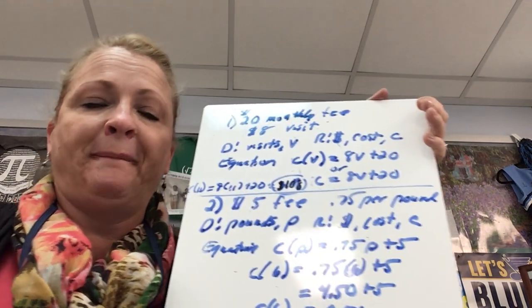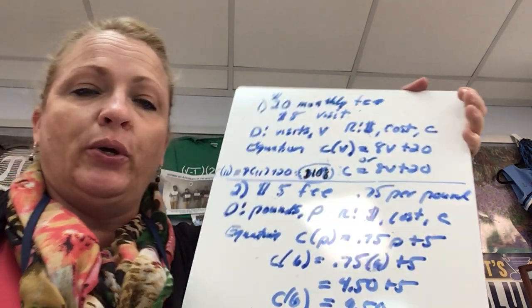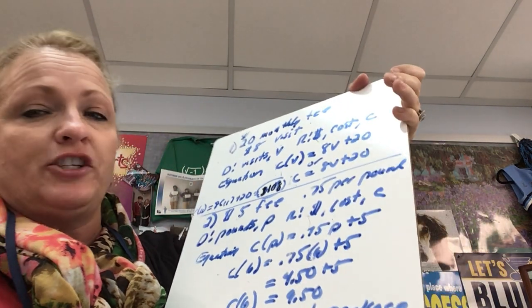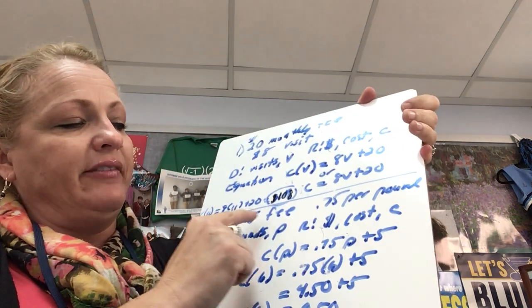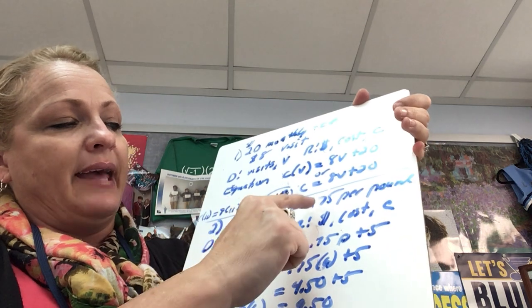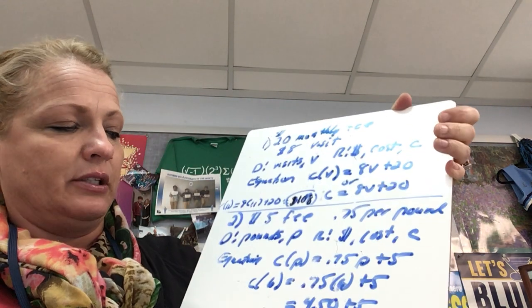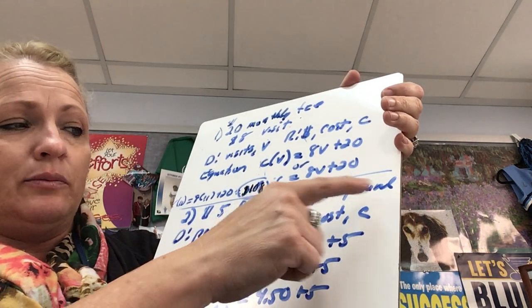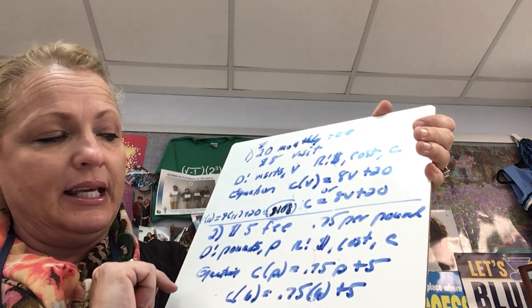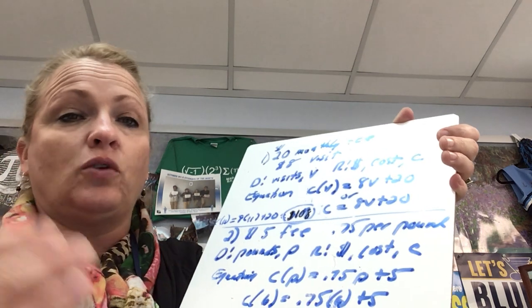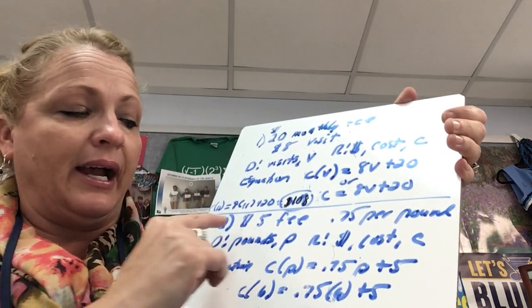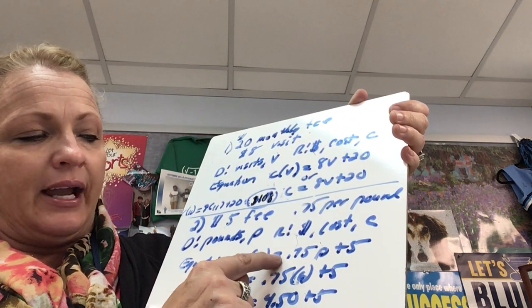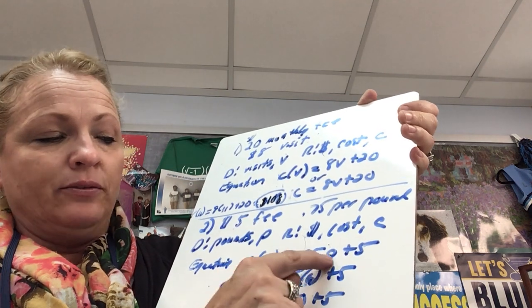Number two is about the cost for mailing a package through FedEx. I just wrote down what I needed, and there's a $5 fee no matter what I mail, and then it is 75 cents per pound. So what's my domain or independent variable? What's my range or dependent variable? My domain is the weight of it, I made it pounds, so I made it P. My range is the cost, how much is it going to cost. The cost is going to be affected by how much it weighs.